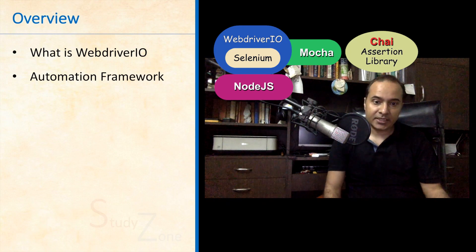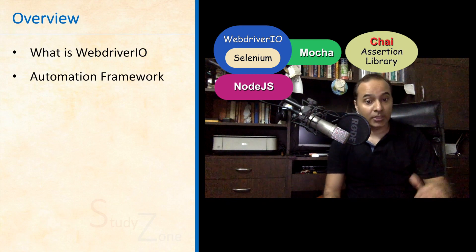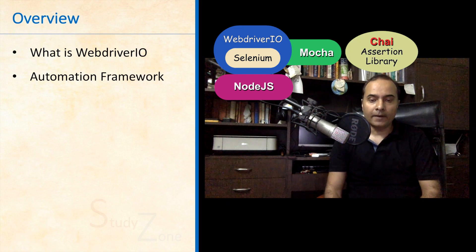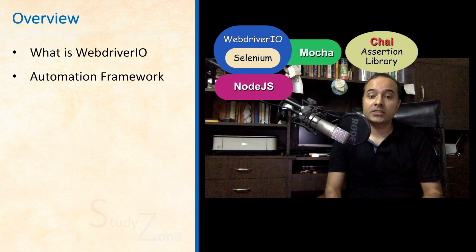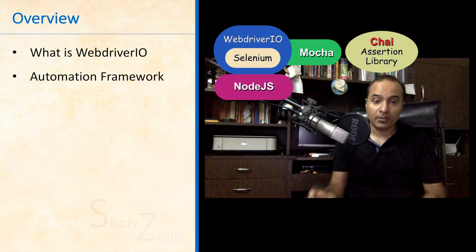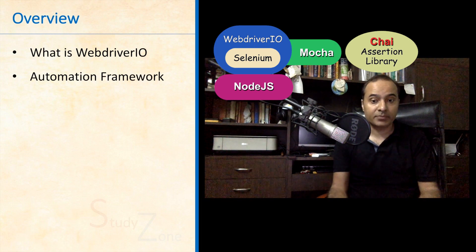Chai has been integrated as the assertion library in this framework. In layman's language, an assertion library is a collection of commands that tell if a statement is true or not.